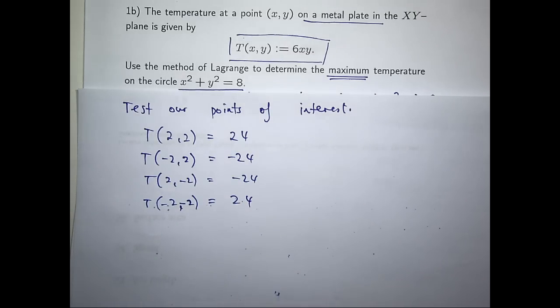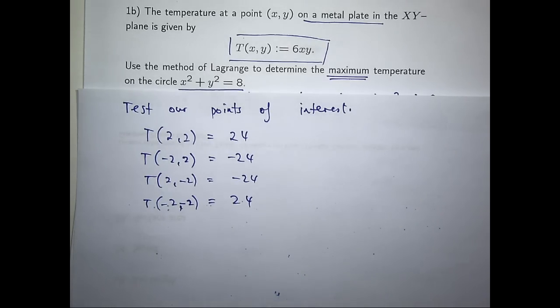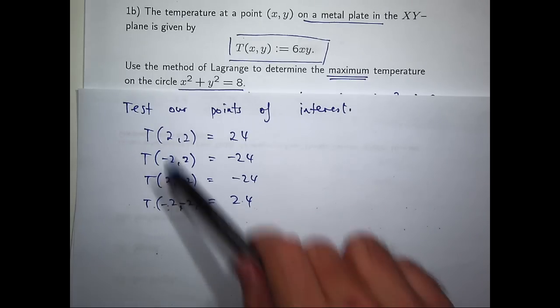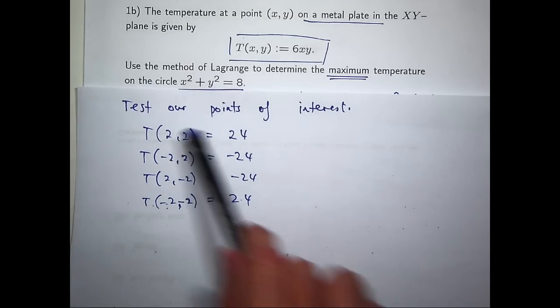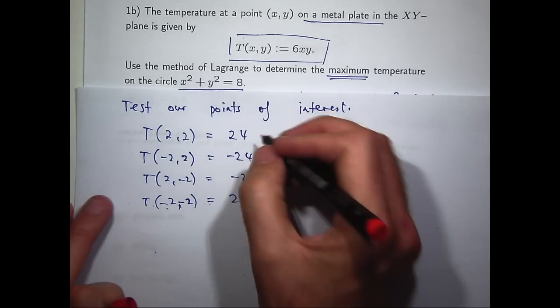Okay, so now we want to look down that list and pull out the largest value or values. You can see 24 is the largest value. We're only interested in the maximum, so let's just choose those two points. There are two specific points of interest, and the maximum value of the temperature is 24.